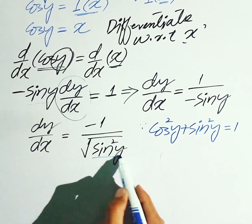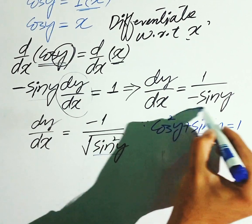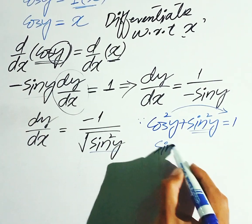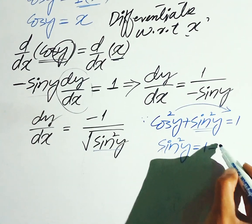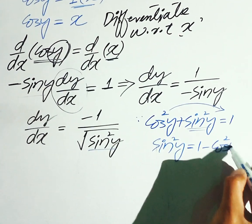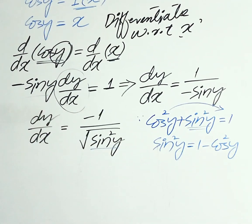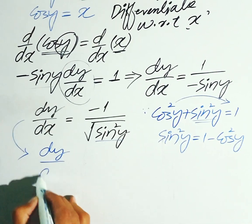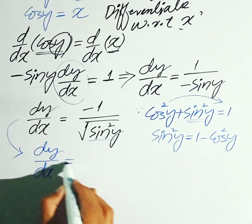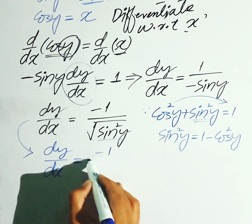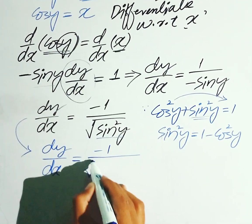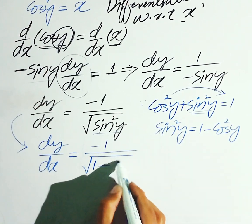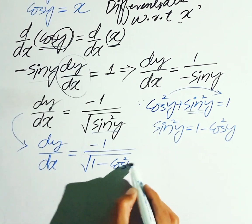cos square y plus sin square y is equal to 1. Hau, apne sin square y ki verify note kerini hai. Toh cos square y ko aap right side pe shift kerenei. So we get sin square y is equal to 1 minus cos square y á jayega.